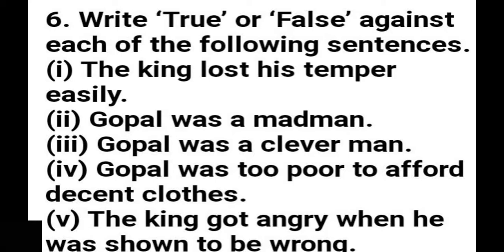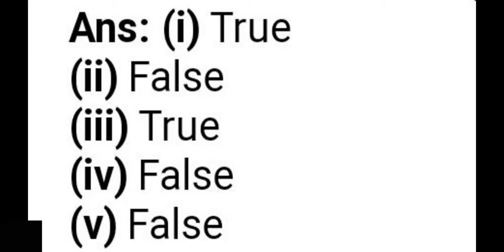Lastly, fifth one: The king got angry when he was shown to be wrong. When Gopal made the king realize that he was wrong, the king didn't get angry. He encouraged him. The king appreciated Gopal for his intelligence. Here we have the answers. You can pause this video and note on this.